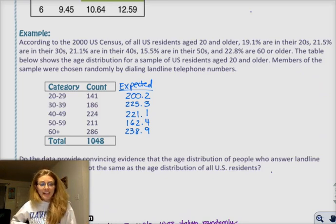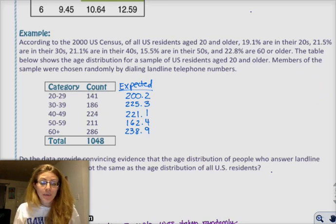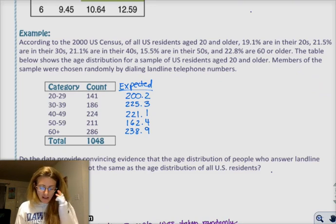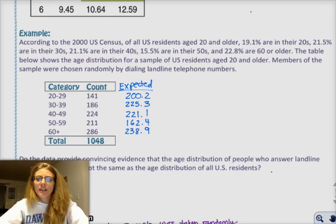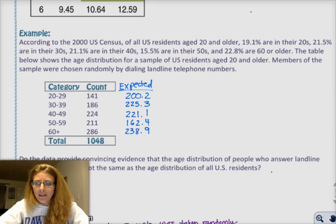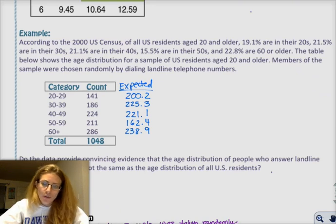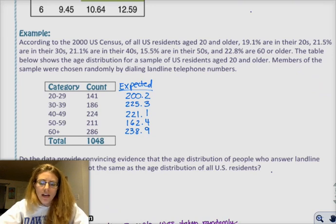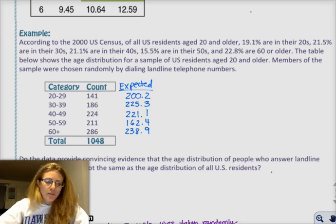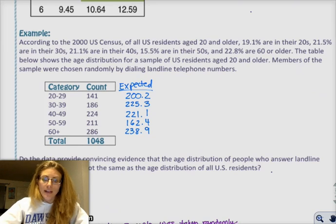If you don't know what the chi-squared test statistic is, you should probably go check the previous video. We have this example with a U.S. census that has 19.1% of residents age 20 to 30, 21.5% are 30 to 40, 21.1% are 40 to 50, and so on. So you have this distribution of values from the U.S.